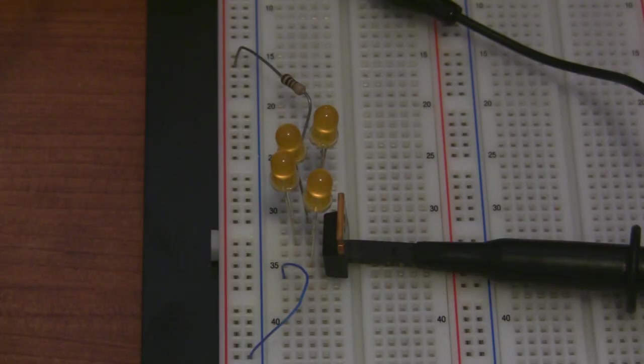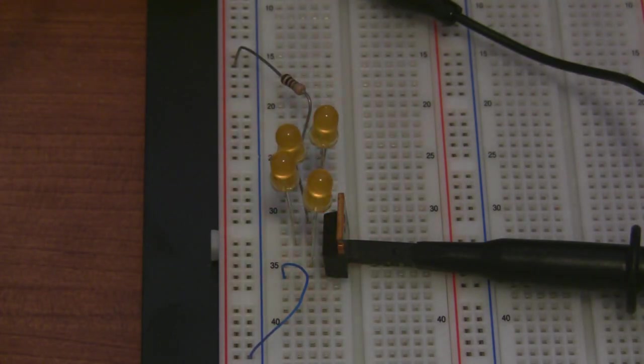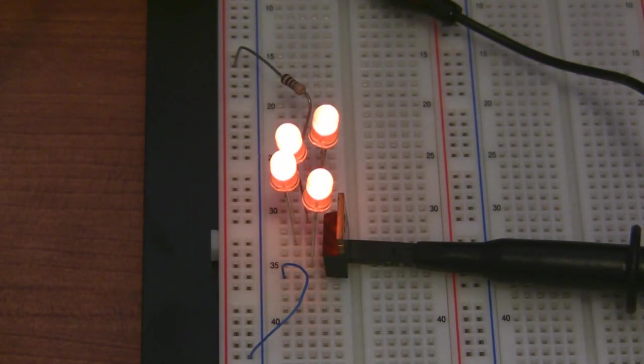I have a transistor here, a power supply set to 12 volts, and a bunch of LEDs. By connecting the function generator's output to the base of the transistor, I can switch the transistor on and off, which will turn the LEDs on and off.